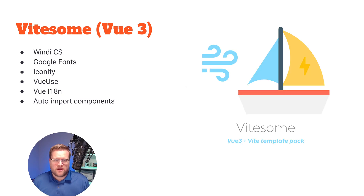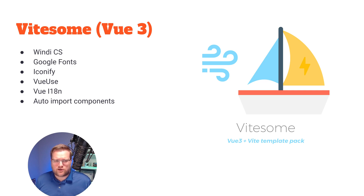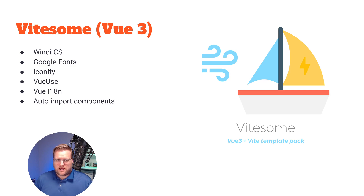The second one is called Vitsum — also a Vue 3 starter template. It has Windy CSS, Google Fonts, icons, Vue Use for Composition API utilities, internationalization, and auto-import components. It's kind of like a smaller, lighter version of Vitesse. Definitely worth checking out. I'll put links to all these starter templates in the description below so you can check them out yourself.